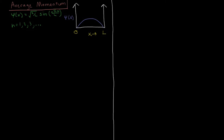Let's calculate the average momentum for the particle in a box. In order to calculate the expectation value — the average value of momentum — we need the operator for momentum. The momentum operator is p-hat, which is minus i h-bar times the first derivative with respect to x. We showed how to arrive at this in the original video on operators, but let's go ahead and use it.